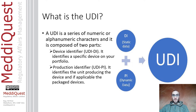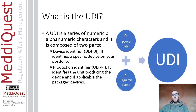Each medical device, and as applicable each package, will have a UDI, which is a series of numeric or alphanumeric characters. It is composed of two parts: the Device Identifier (DI), which identifies a specific device in your portfolio and is the static part that doesn't change within the same model, and the Production Identifier (PI), which identifies the unit of production and includes lot number, serial number, manufacturing date, etc.